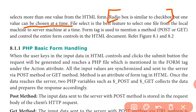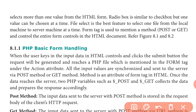File select is the feature used to select one file from the local machine to send to the server. Form tag is used to mention the method — POST or GET — and to control the entire form in the HTML document.